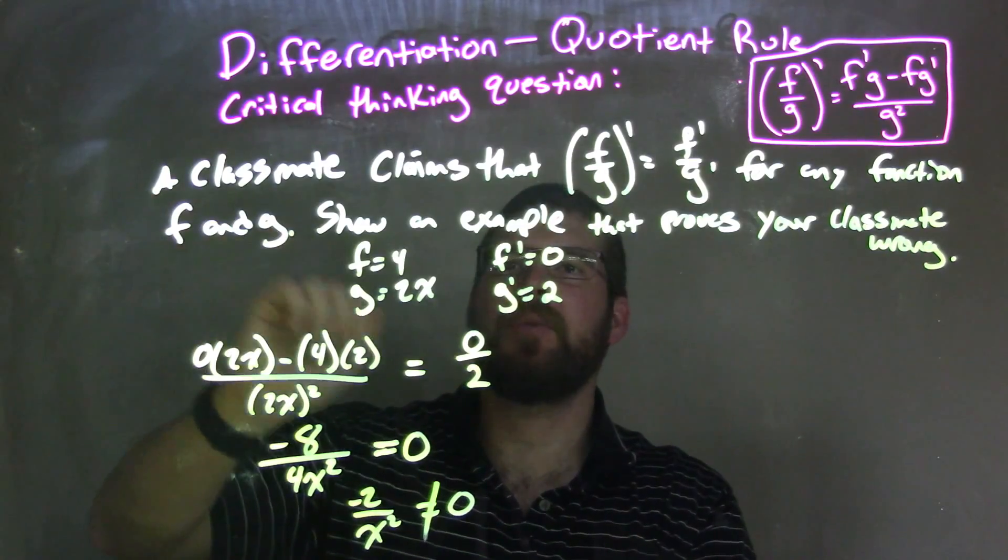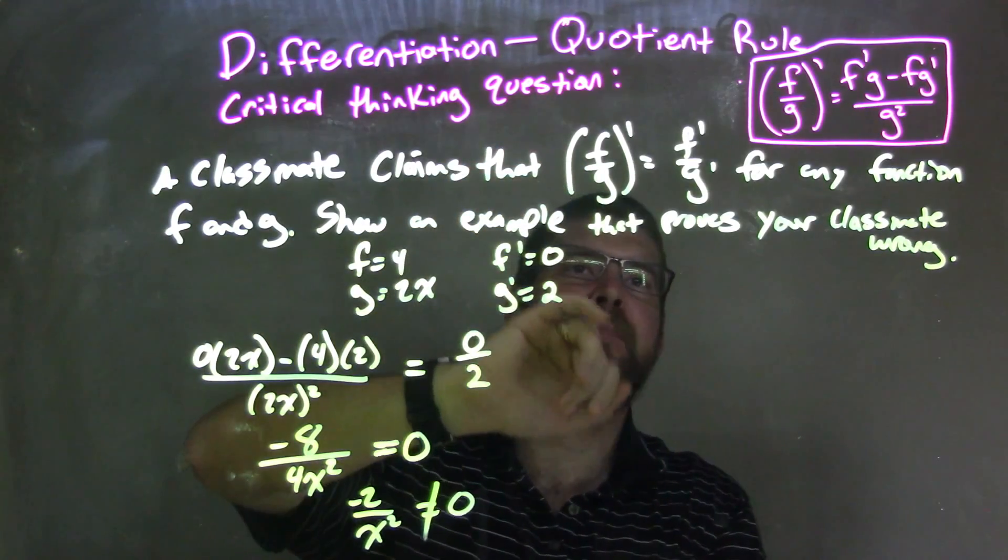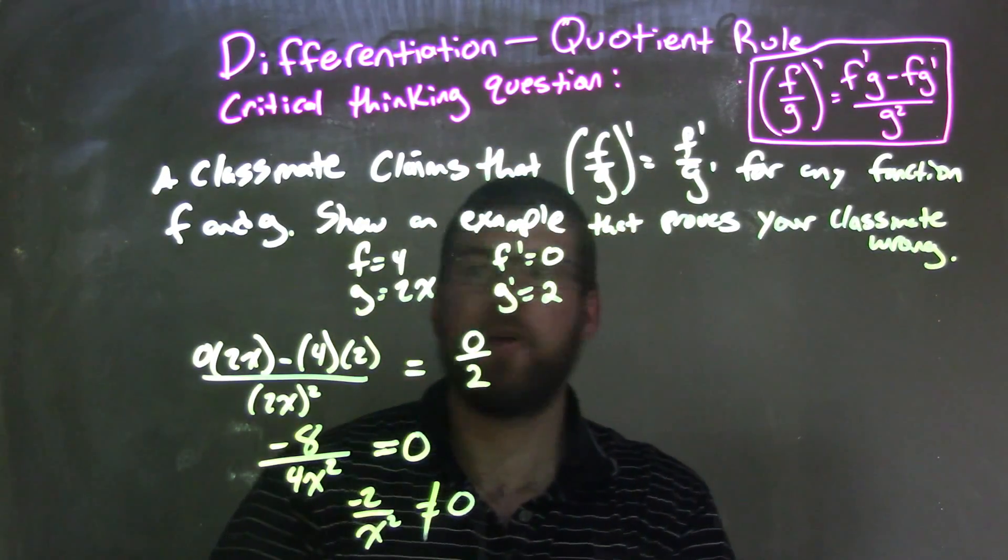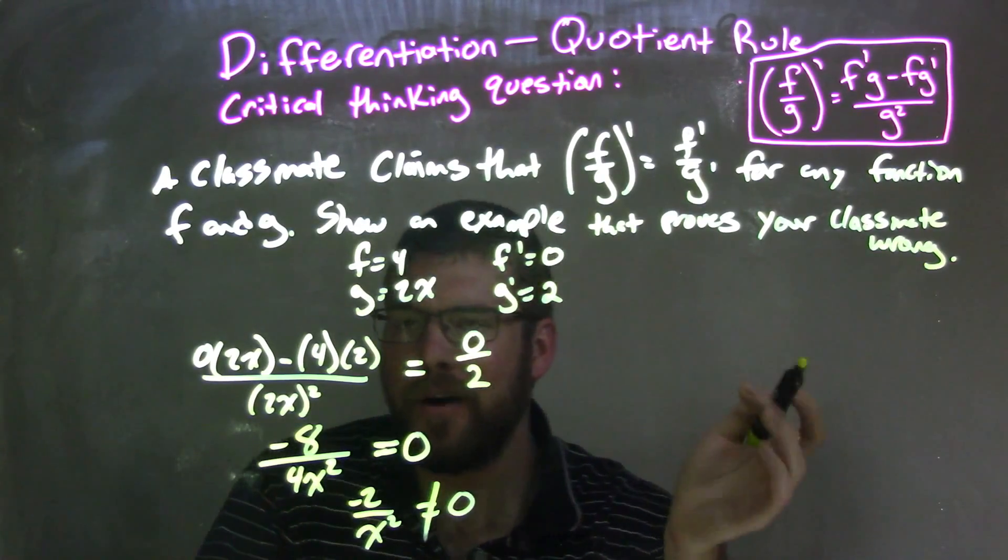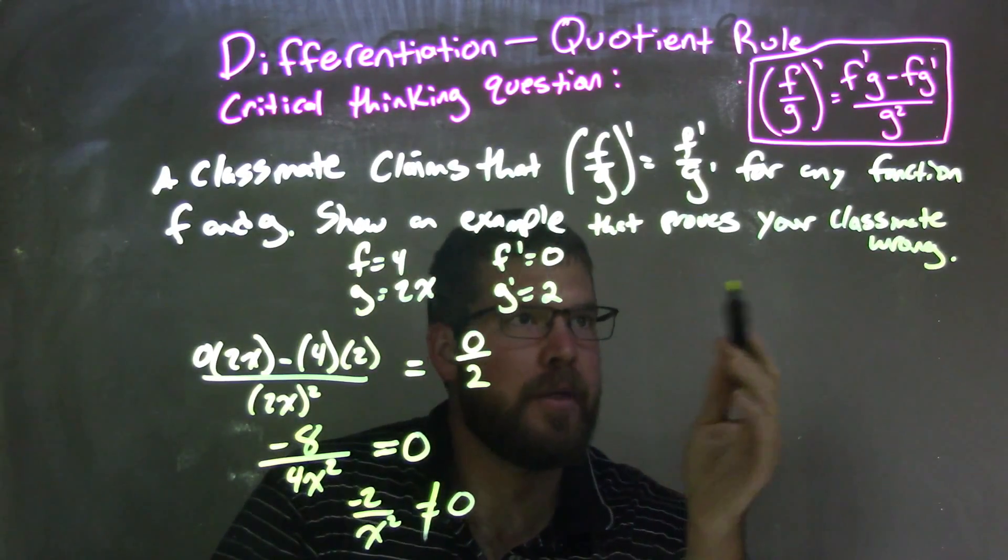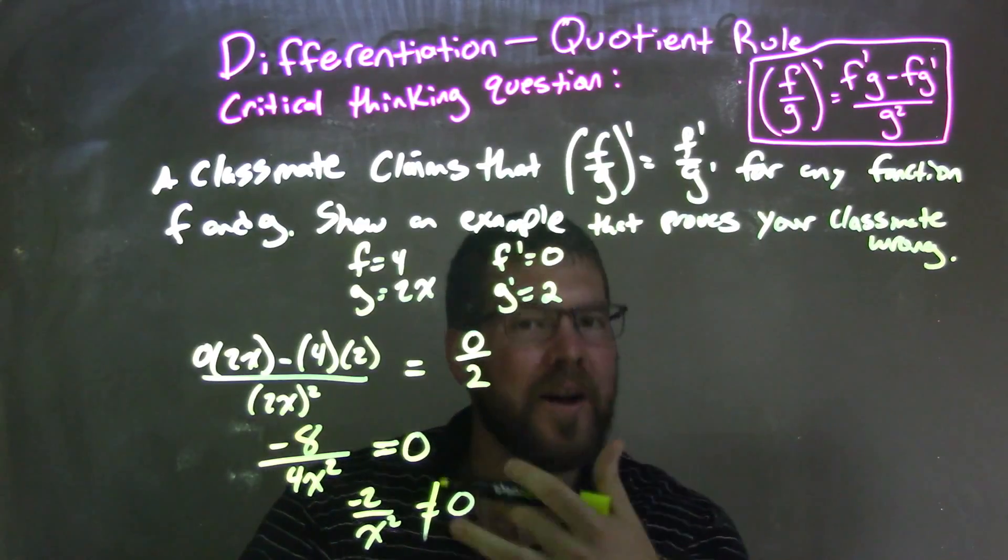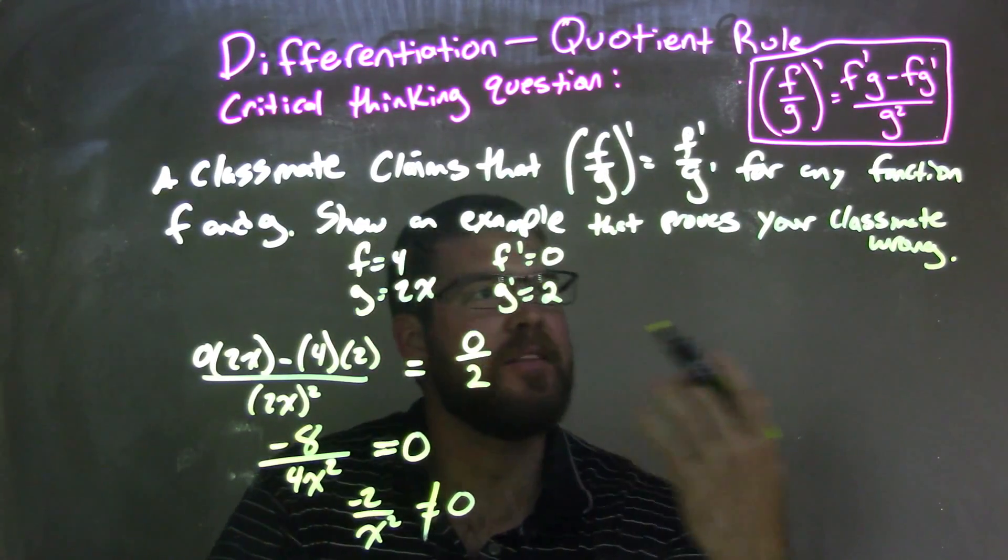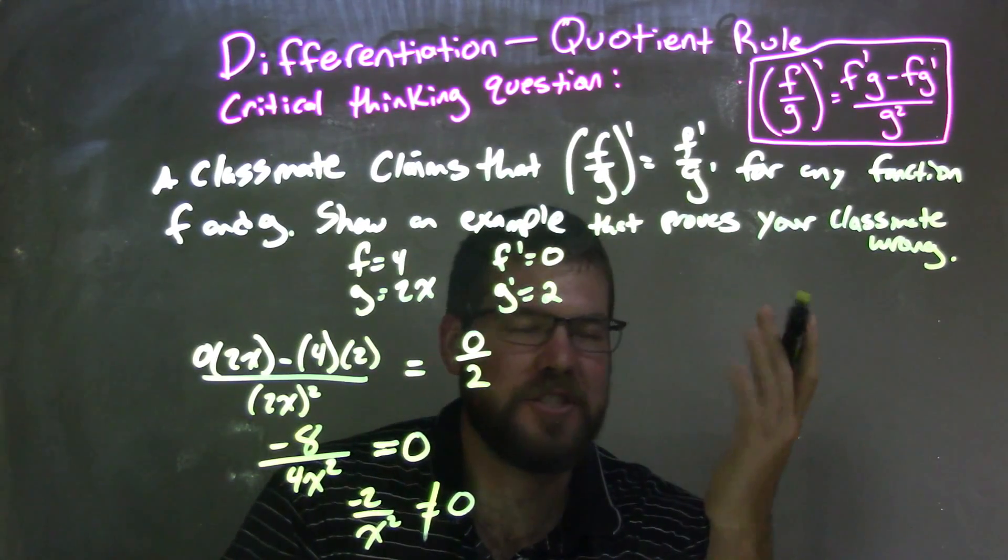So let's recap. We're given a classmate claim that f over g all prime is equal to f prime over g prime for any function f and g. Again, the key is I said for any function. Show an example that proves your classmate wrong. So if I can find one function where it's not right, then the claim is incorrect because he or she said it's for any function.